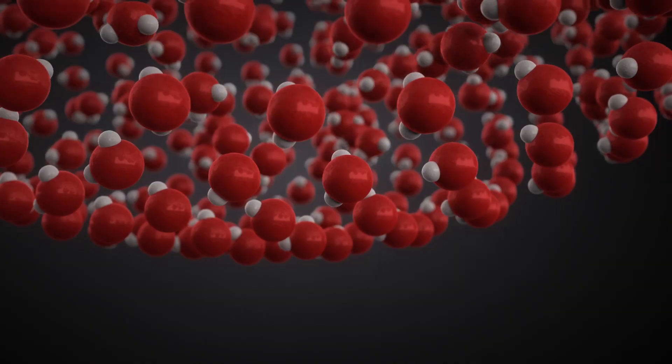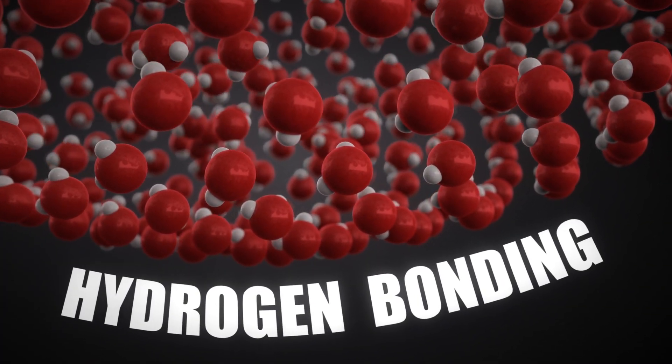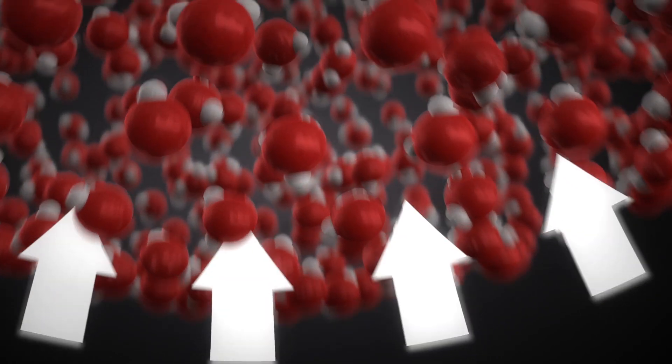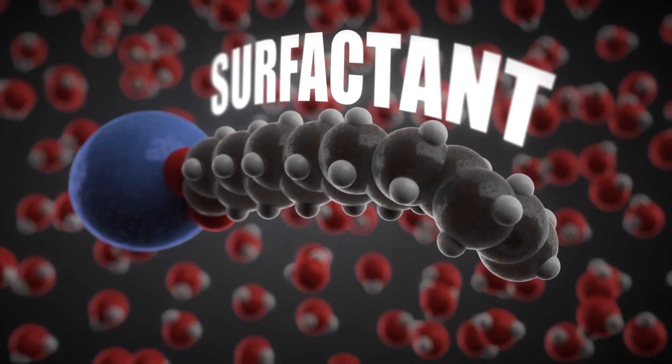A surfactant is a compound that reduces the surface tension of water by increasing its adhesion to air and surfaces. Surfactant molecules behave like a polarized magnet, with the tail repelling water and the head attracting it.